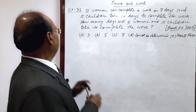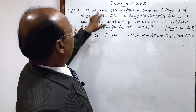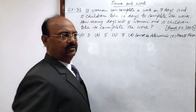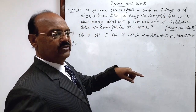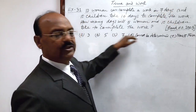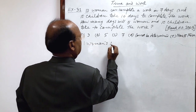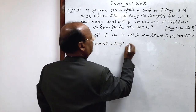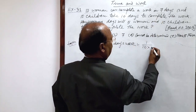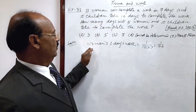Let us see the solution. 10 women can complete a work in 7 days — number of women is 10, number of days is 7. So, 1 woman's 1-day work will be 1 upon 10 into 7. We can write this directly because this is a multiple choice question. So 1 woman's 1-day work is equal to 1 divided by the number of women into number of days, which equals 1/70.